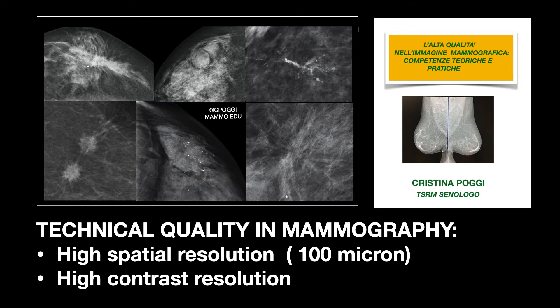We should be able to effectively document micro-calcifications of 100 micron average dimension, characterized by high contrast, to properly assess the lesion morphology, especially its margins, and also to assess very low contrast breast tissue portions, to highlight parenchyma thickenings and eventual architectural distortions.